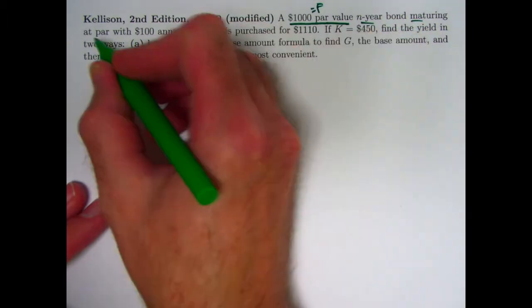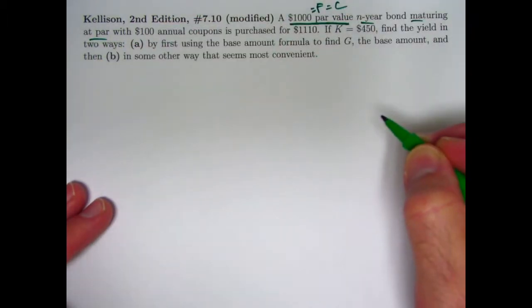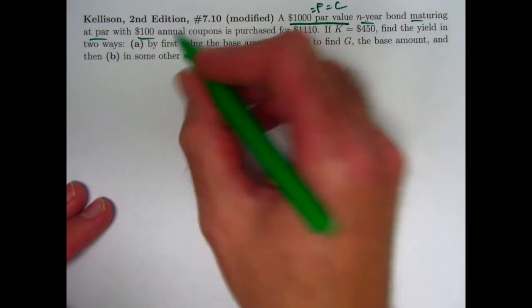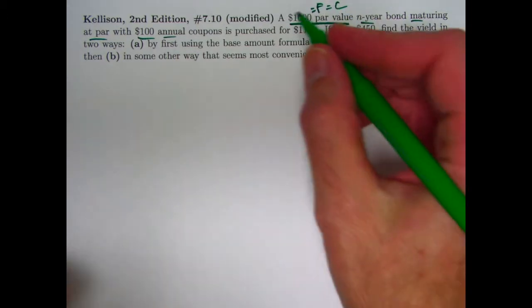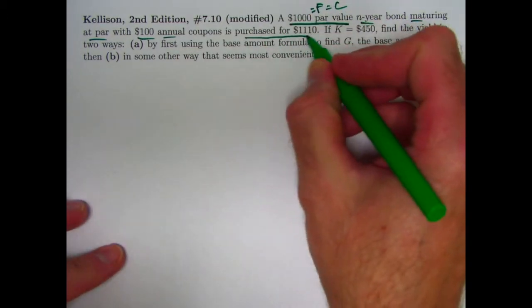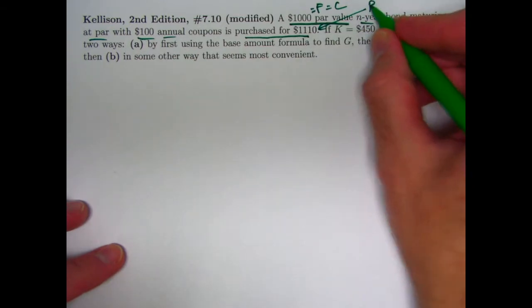It's maturing at par so the redemption amount, C, is the same as the face value. It's got $100 annual coupons, not semi-annual but annual, so our rates will be as an annualized rate. It's purchased for a purchase price of $1,110. That is the value of P.